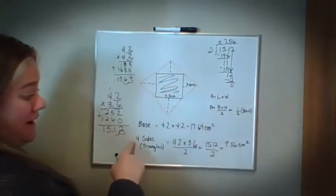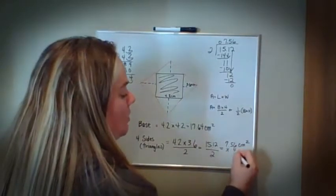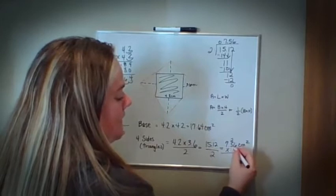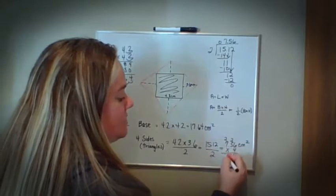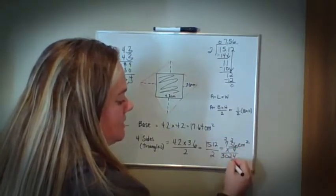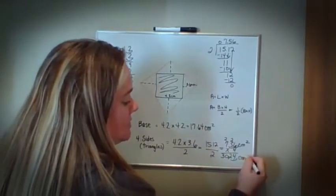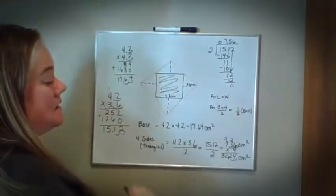But remember, I have four of those sides. So I have to multiply that by 4. 6 times 4 is 24. 5 times 4 is 20 plus 2 is 22. 7 times 4 is 28 plus 2 is 30. 2 decimal places. So 30.24 centimeters squared are my triangles.